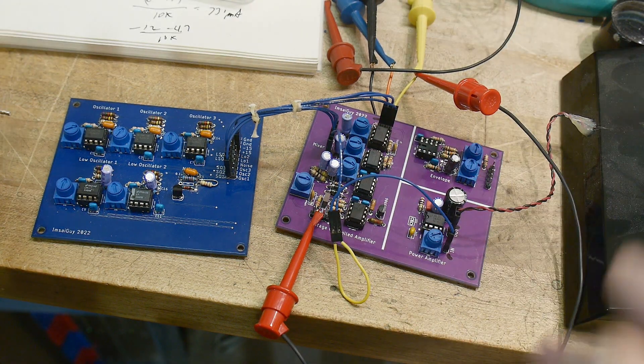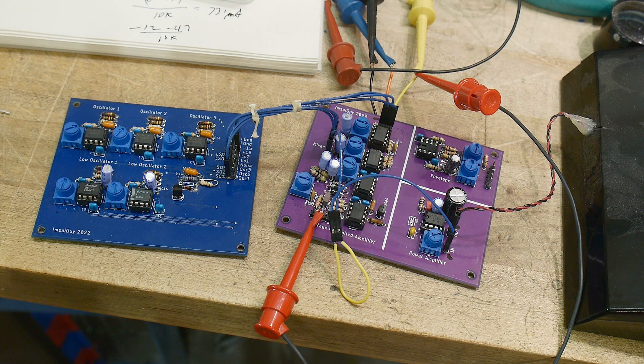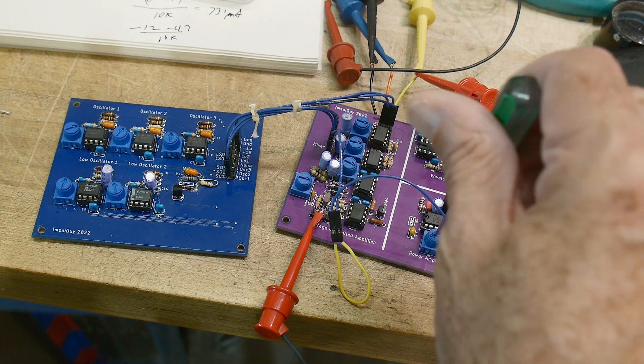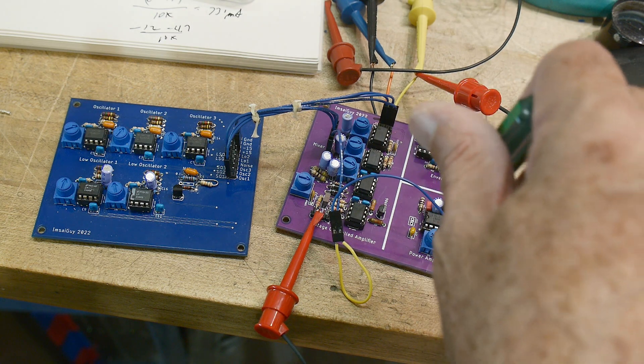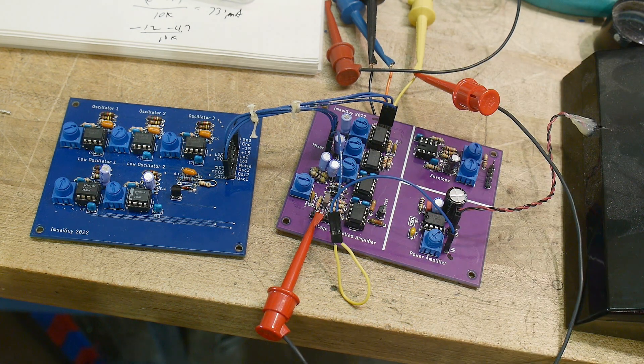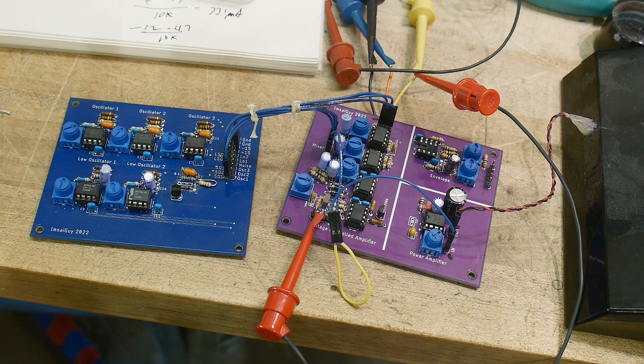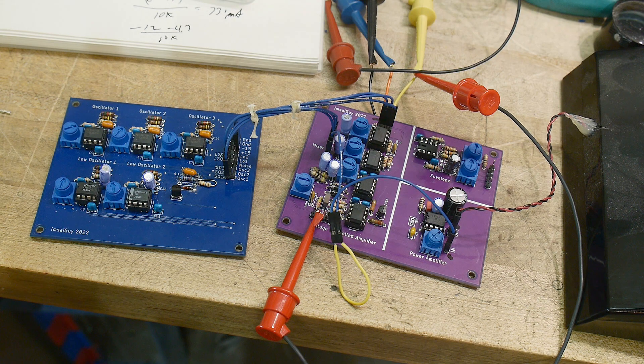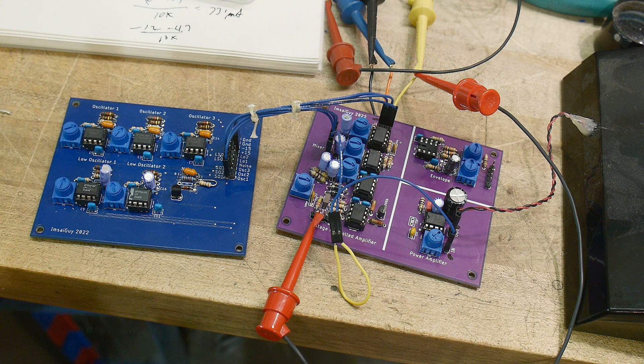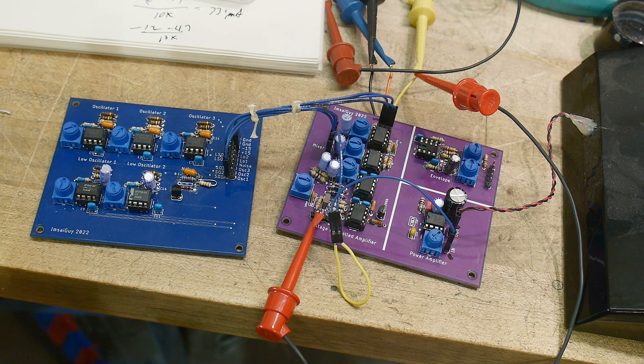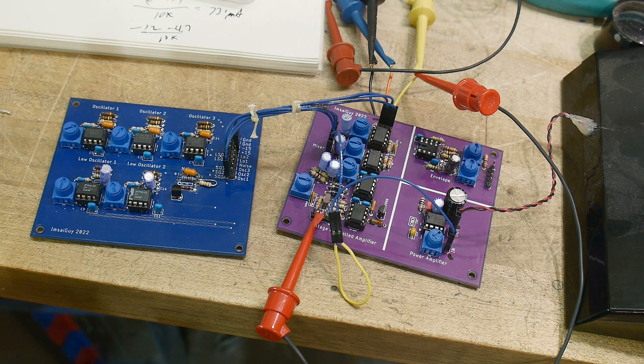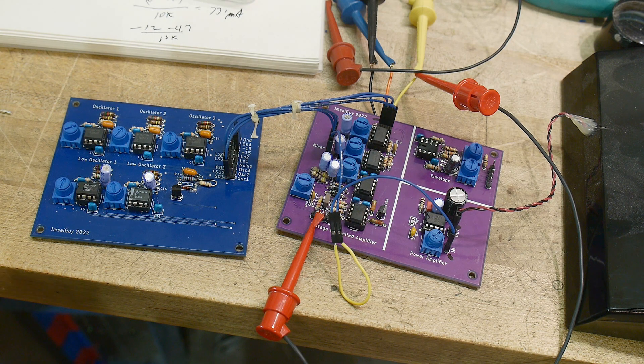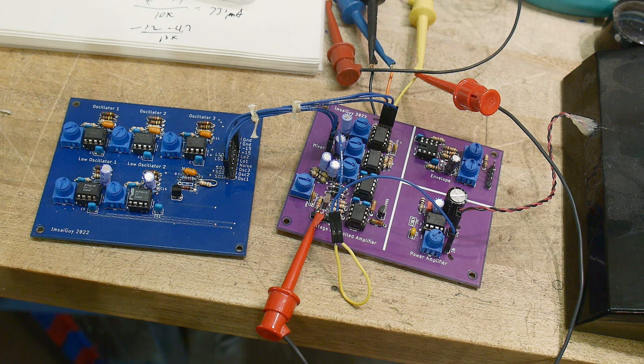So the volume knob on the power amplifier works as well. So, progress. The voltage-controlled amplifier does seem to work sometimes and then other times it seems to go into kind of a motorboating thing, so not quite sure what's going on. Something's just not quite stable somewhere and I need to figure that out, but otherwise things are looking good.